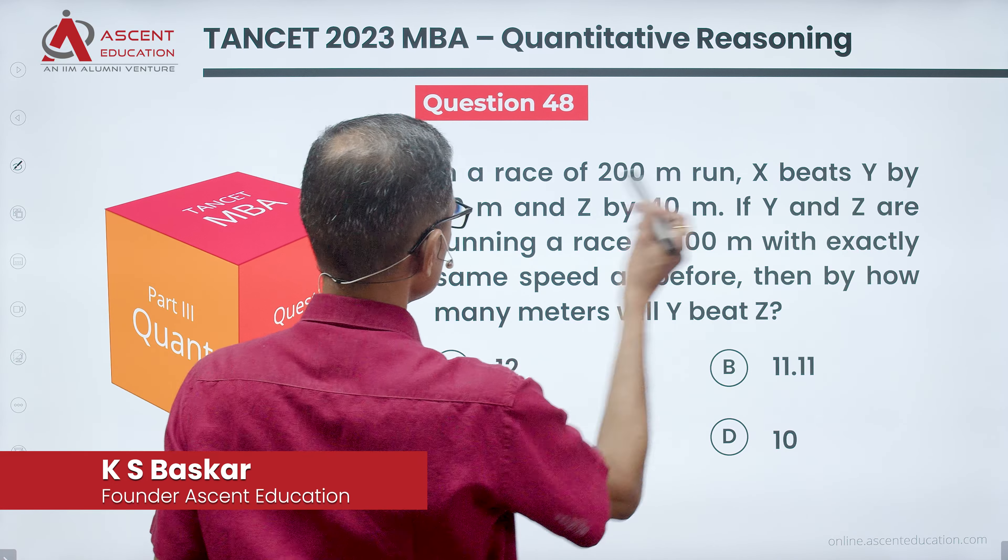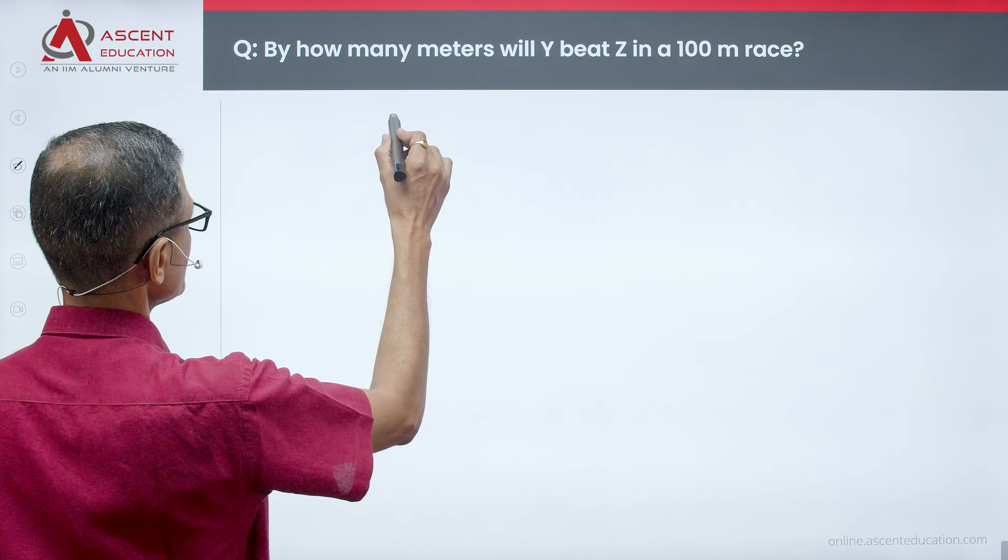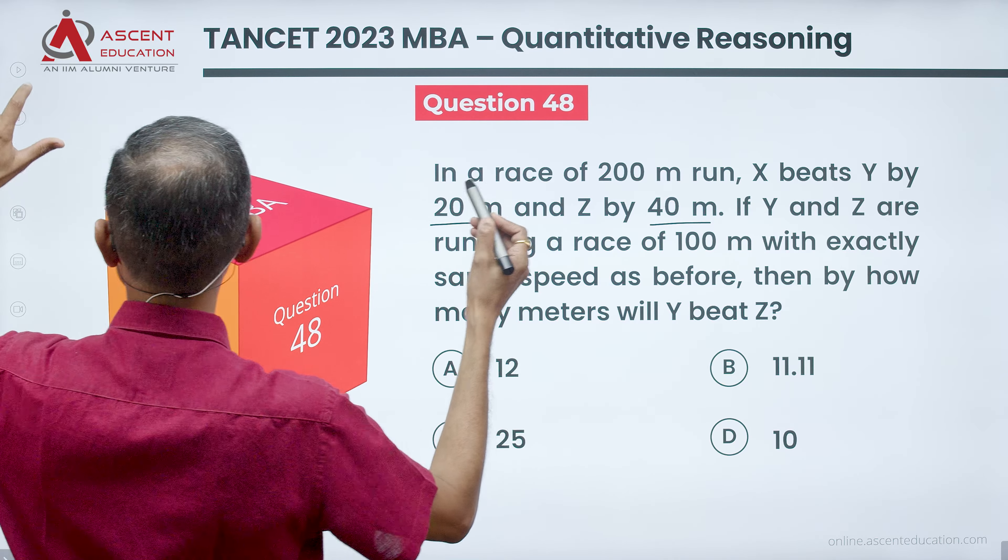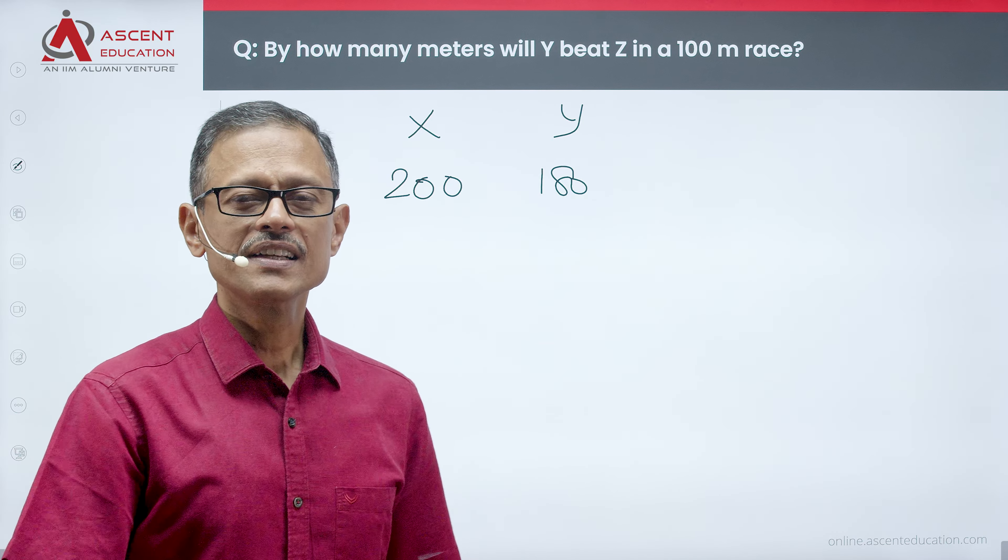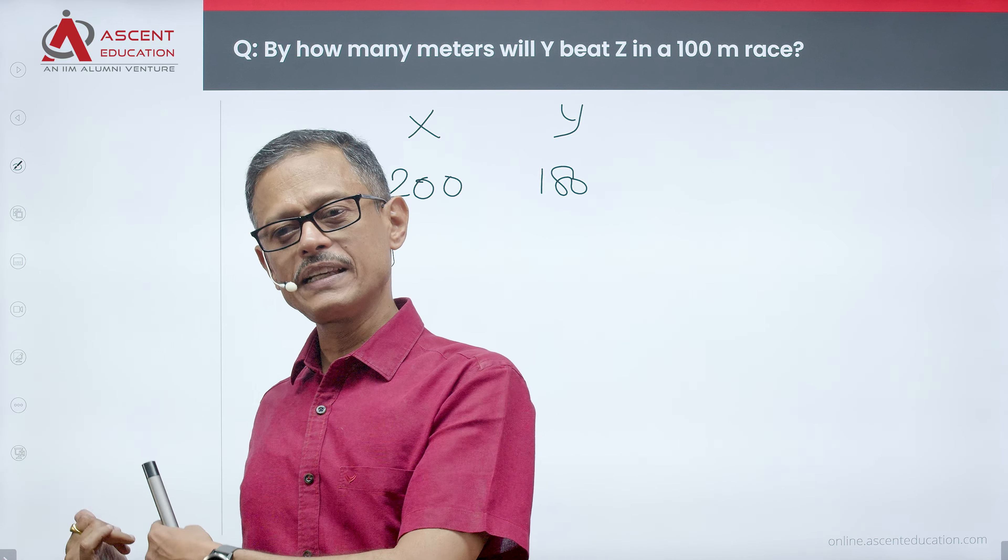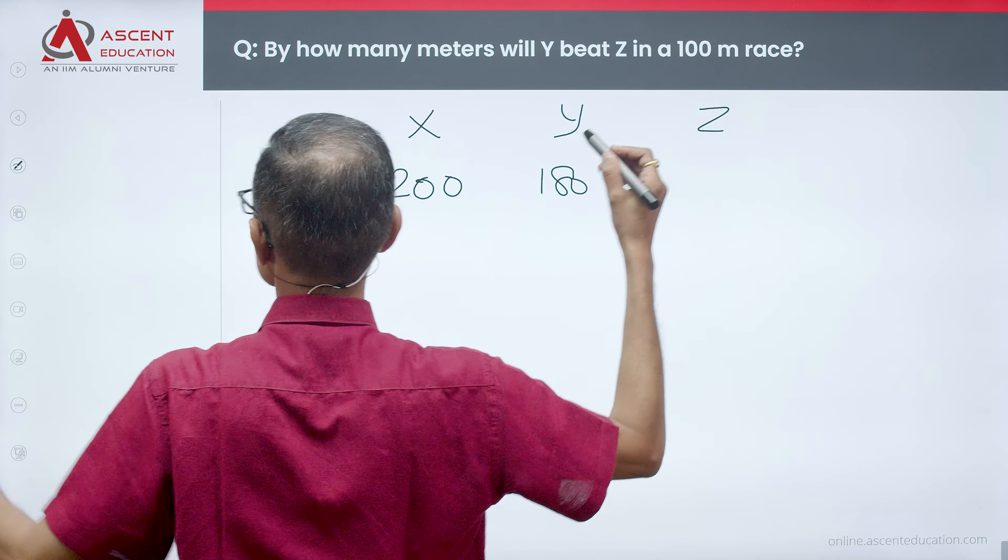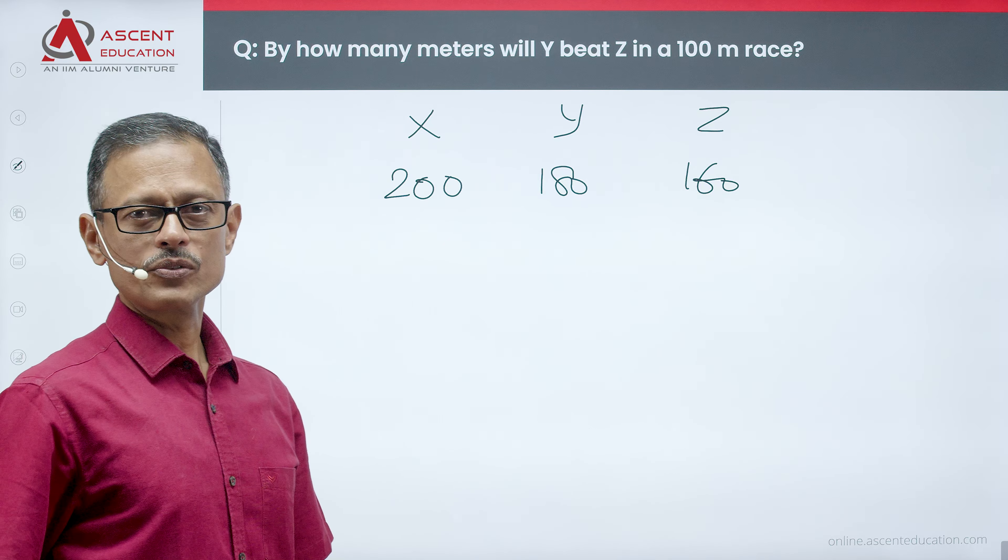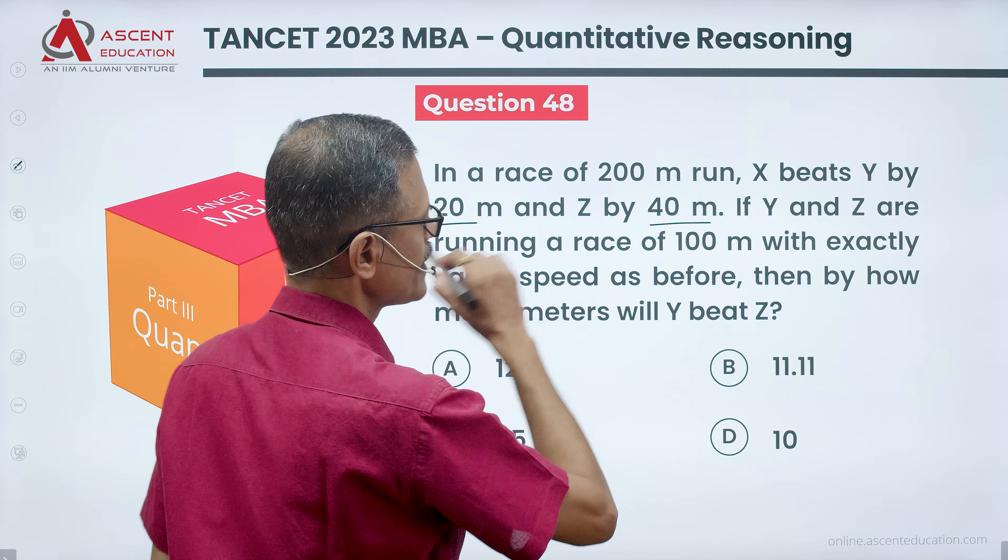In a 200 meter race, X beats Y by 20 meters and Z by 40 meters. This is how we write it: race length is 200 meters. X finishes 200 meters. He beats Y by 20 meters, so Y is at 180 meters. He beats Z by 40 meters, so Z is at 160 meters. This is the first information in a 200 meter race.